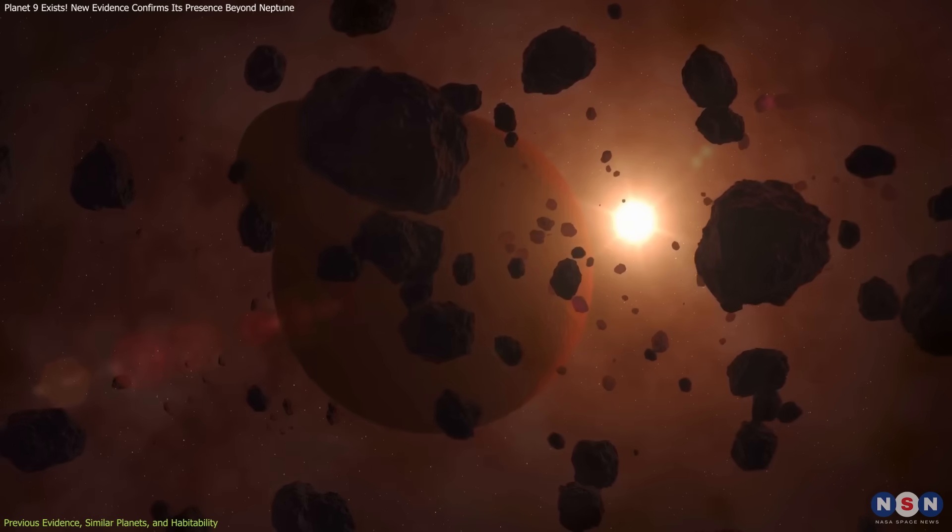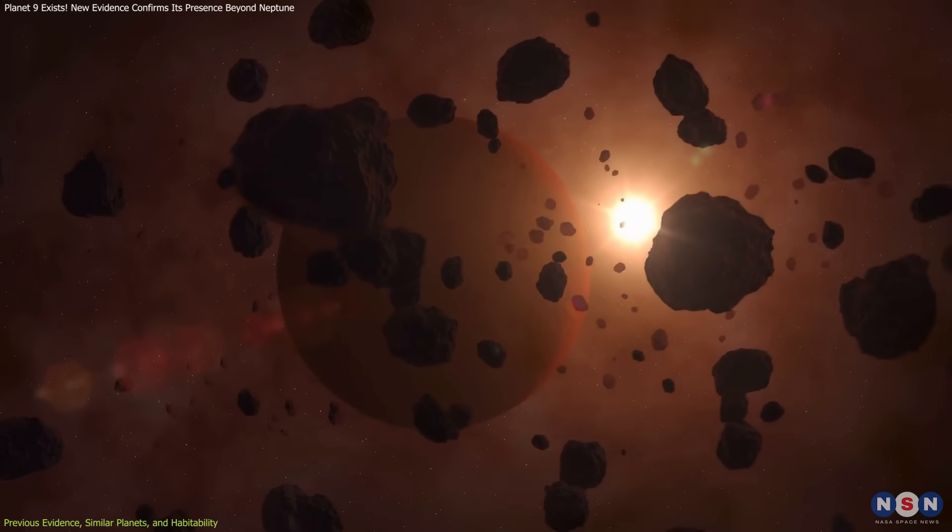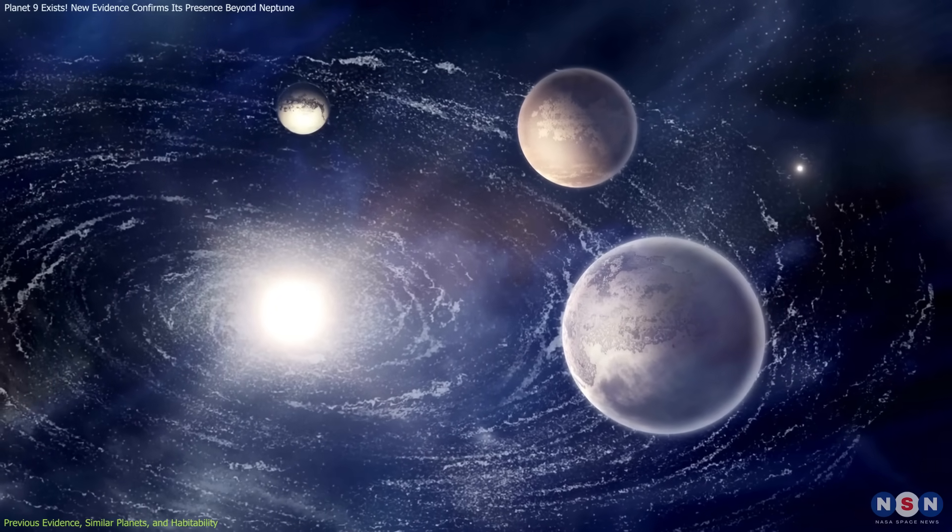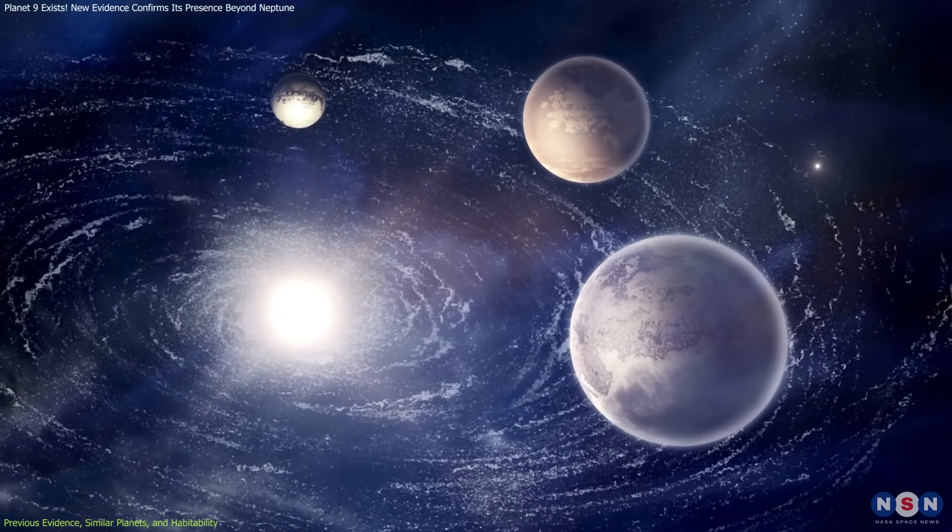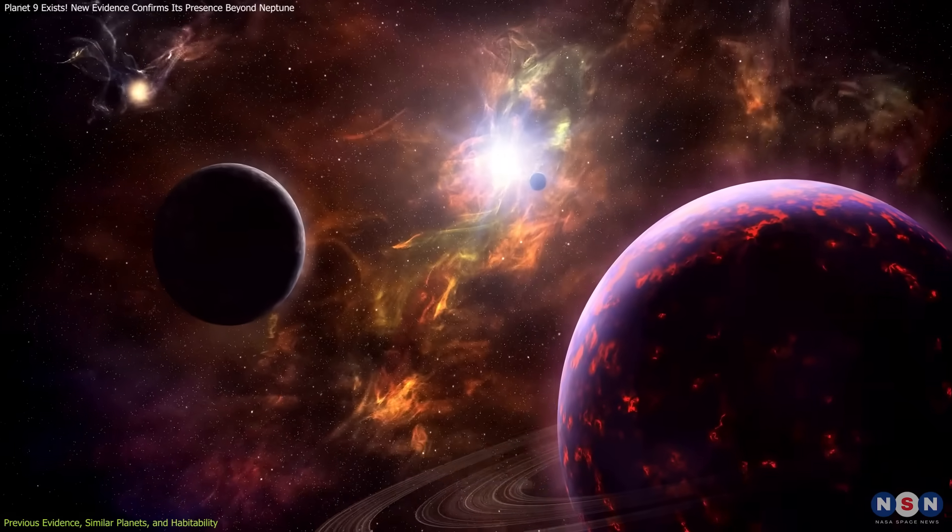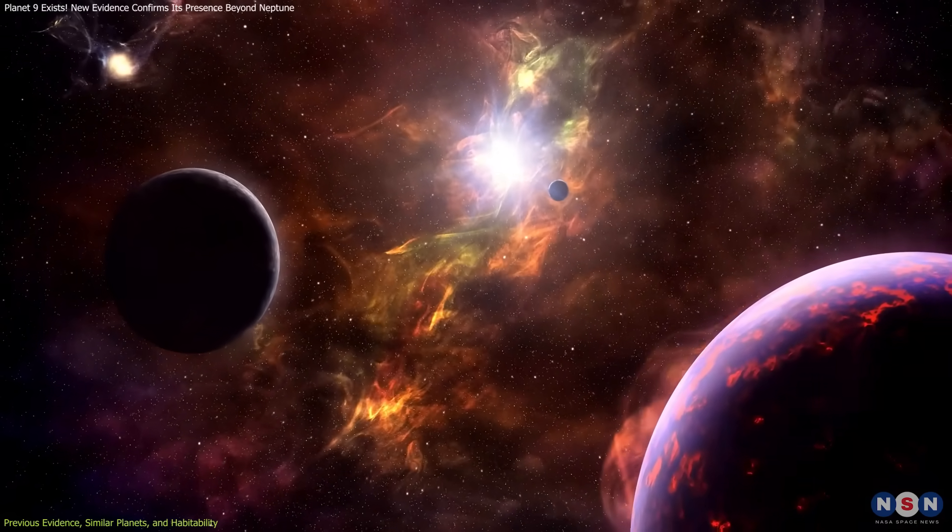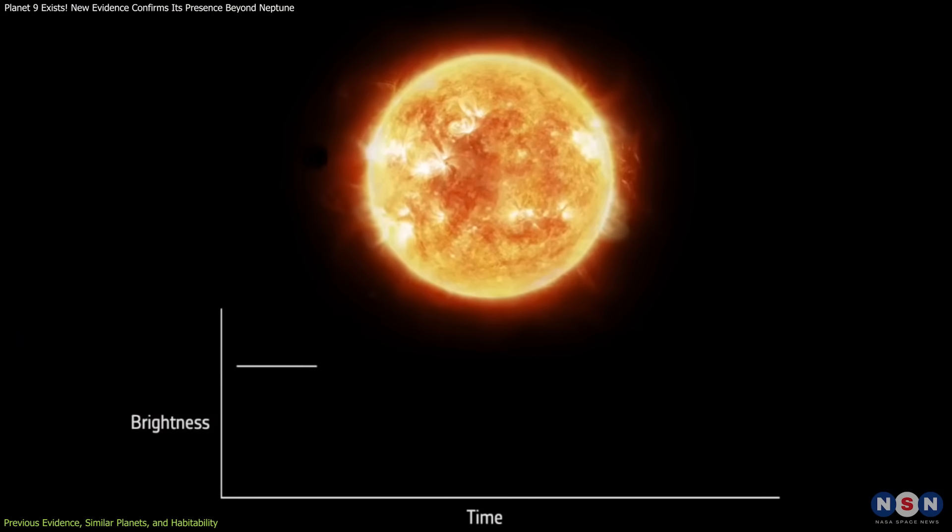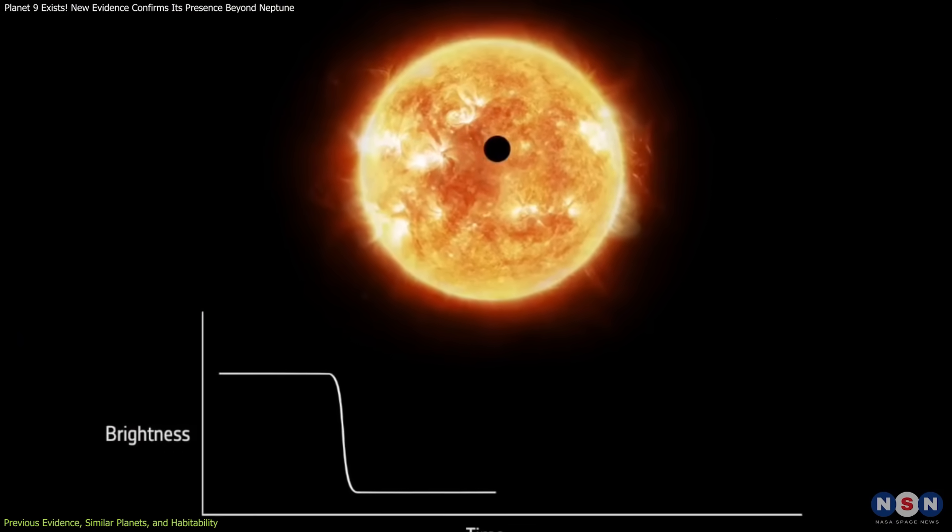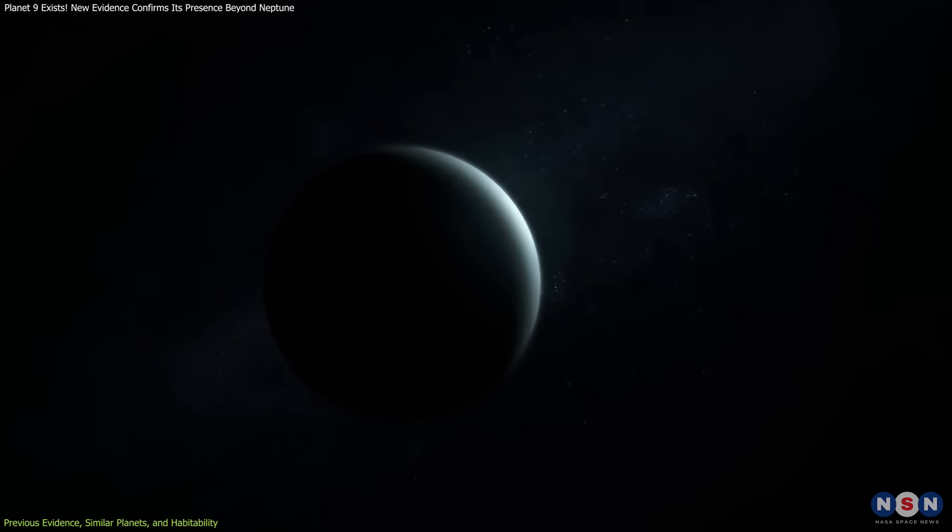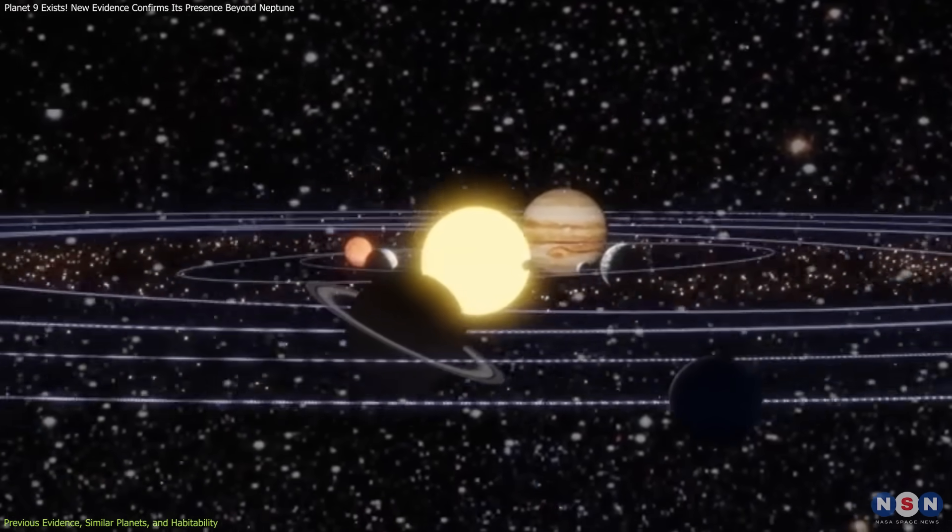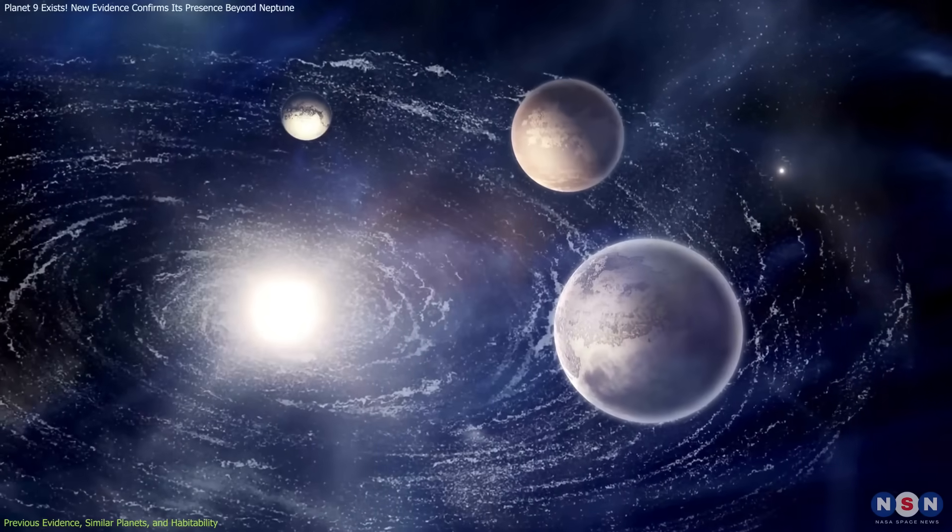Interestingly, the idea of a hidden planet isn't unique to our solar system. In other star systems, astronomers have found planets that influence their surroundings in similar ways. For example, some exoplanets have been discovered because their gravity tugs on nearby objects or distorts the light from their parent stars. These so-called perturber planets share similarities with Planet Nine, providing a fascinating parallel between our solar system and distant worlds.